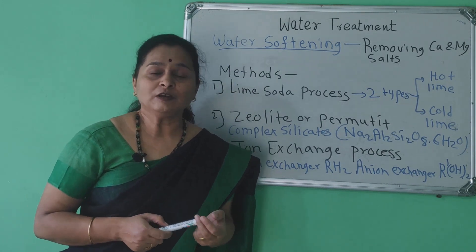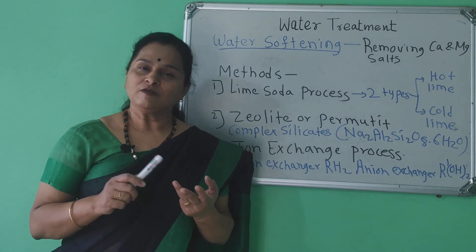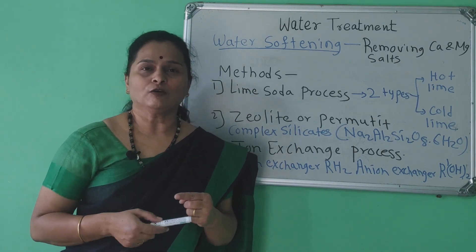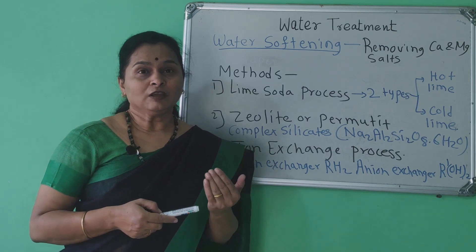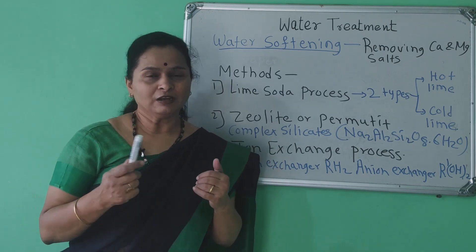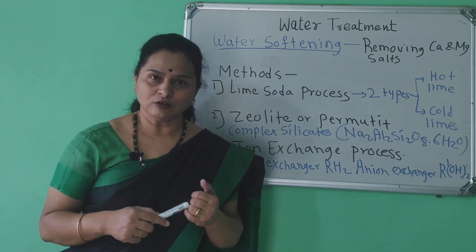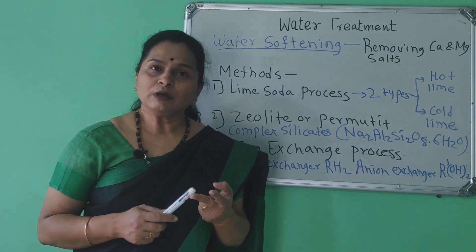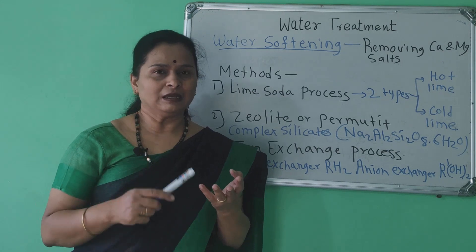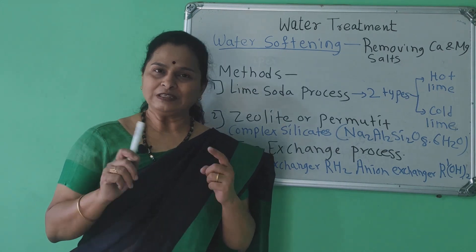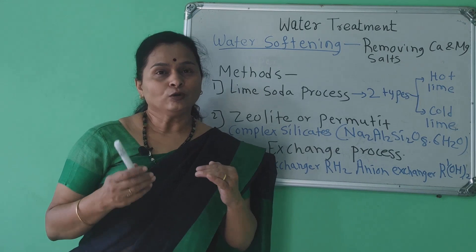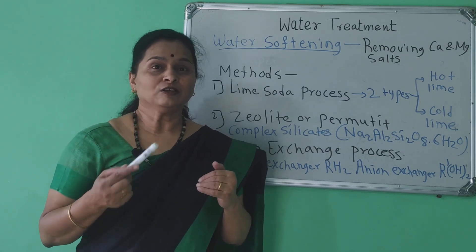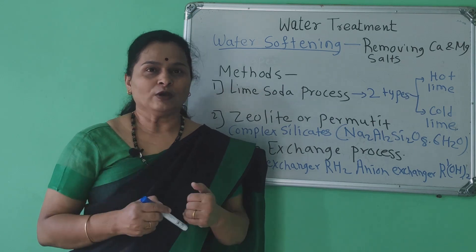which impurities are present in water, the difference between hard water and soft water, the different causes of hardness of water, and the effect of hard water when used in a boiler for steam generation. These effects include boiler corrosion, caustic embrittlement, priming and foaming, and scale and sludge formation. We will also cover the difference between scale and sludge, how to remove them, and the disadvantages of scale and sludge in a boiler.